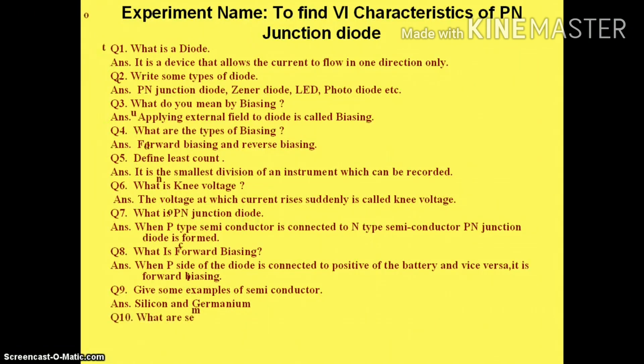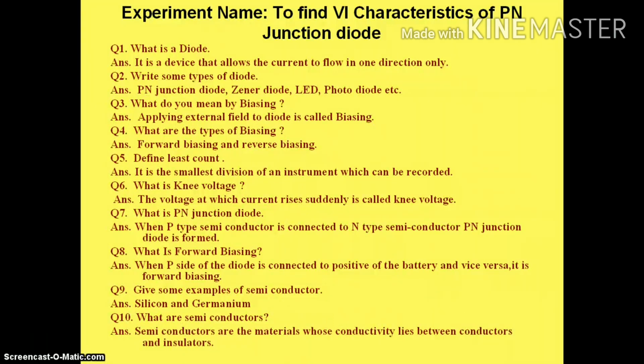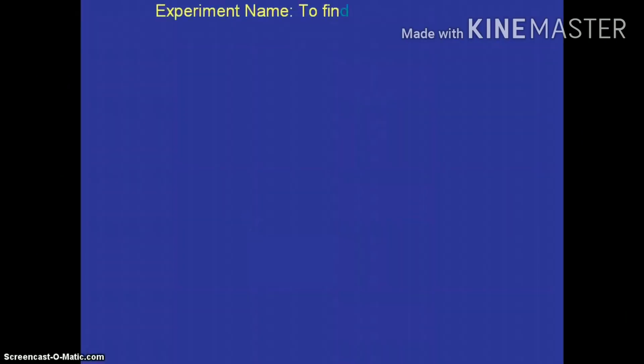Give some examples of semiconductors. Examples are silicon and germanium. What are semiconductors? Semiconductors are those materials whose conductivity lies between conductors and insulators.